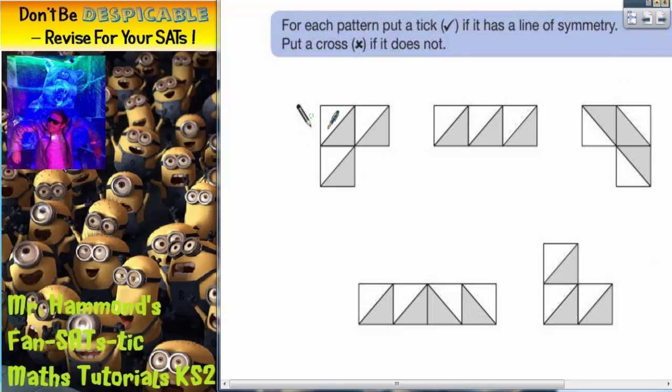So the first shape does indeed have a line of symmetry slanted diagonally through the shape. And if you check that with your mirror, this half of the shape would fold over and fit over this half if it was folded. So that triangle would fit on there and that half of the triangle would fit on there. So it would fit. So that's a line of symmetry.